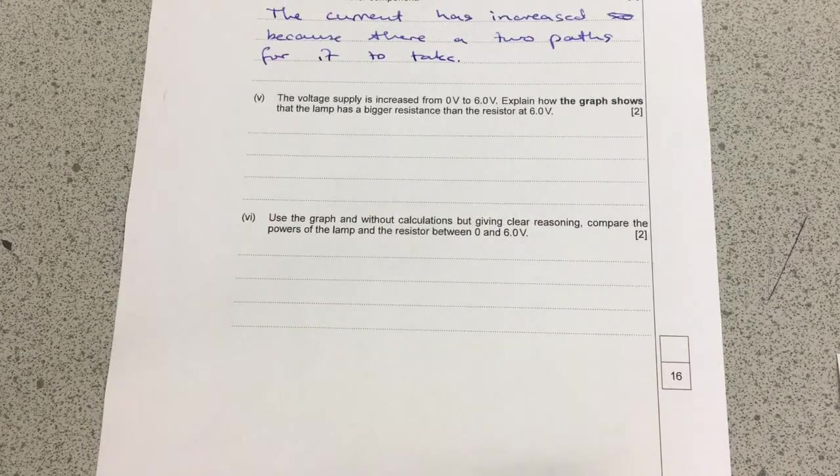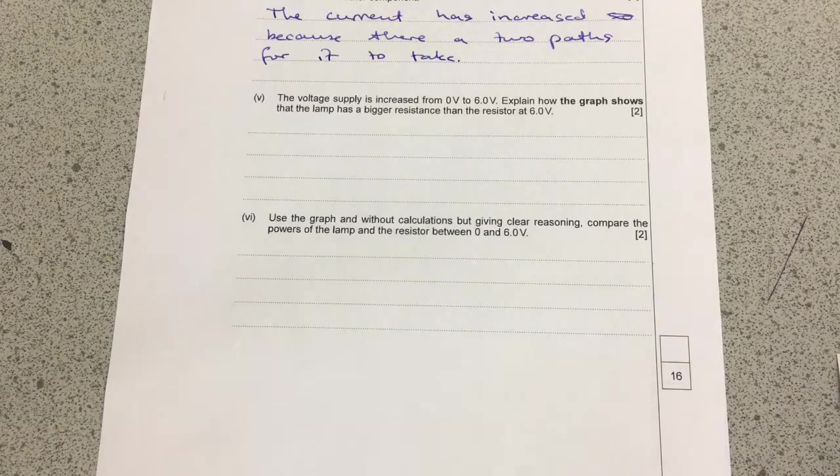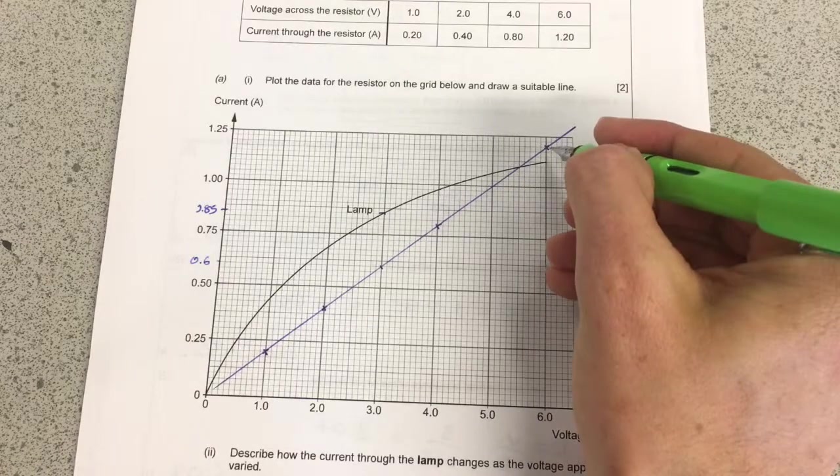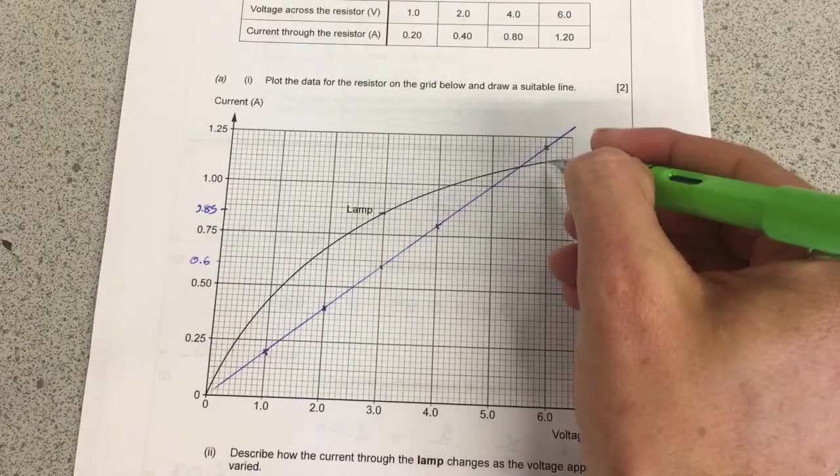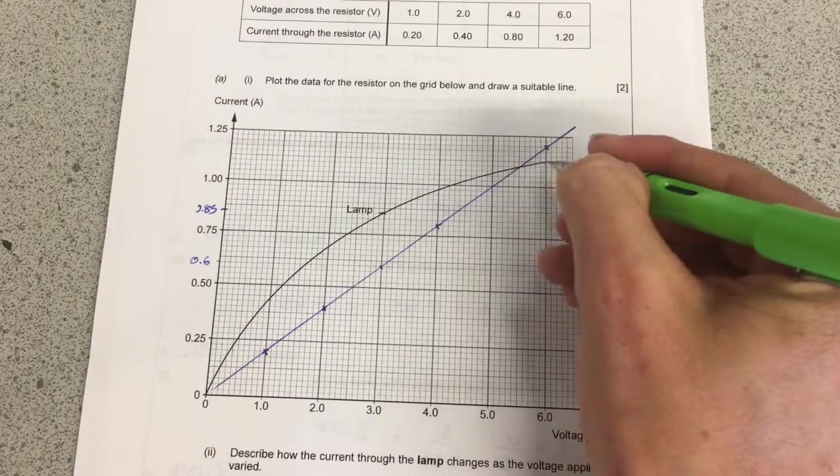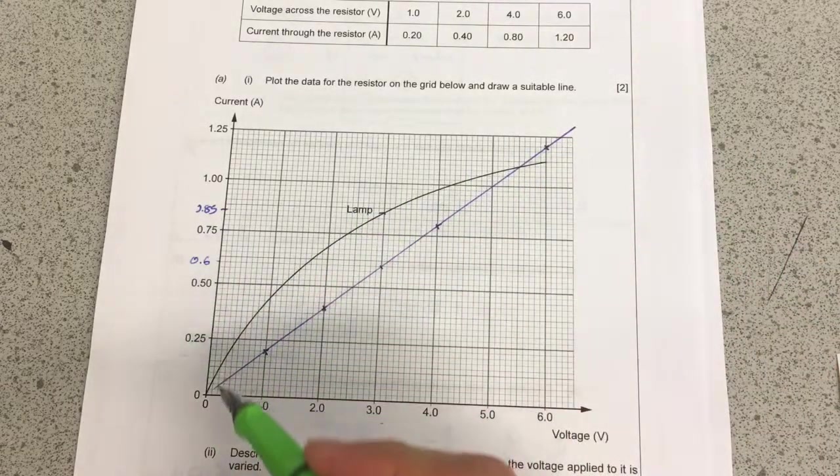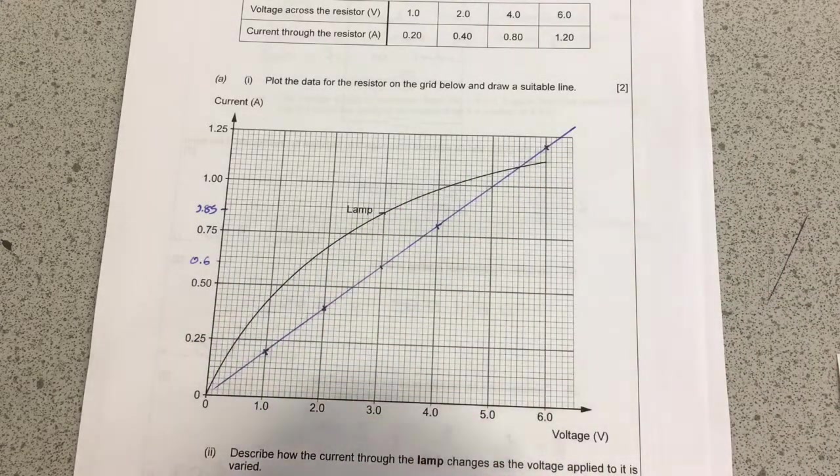So the voltage supply has increased from 0 to 6. Explain how the graph shows that the lamp has a bigger resistance. So if we have a look at 6 volts here, there's two ways we can do this. The easiest, I think, is to talk here about the gradient. So the gradient of the graph is equal to the inverse, the opposite of the resistance.